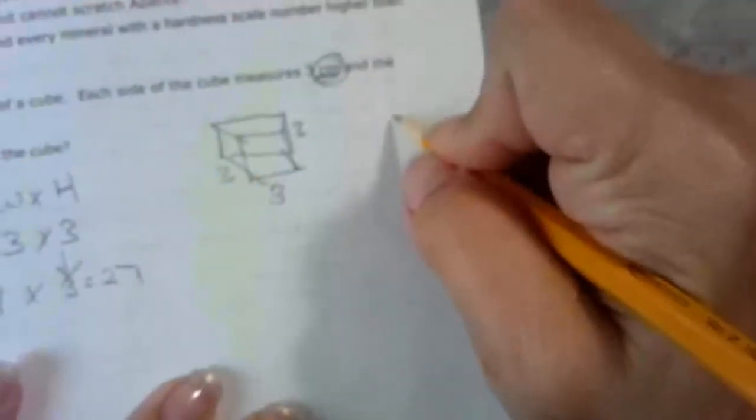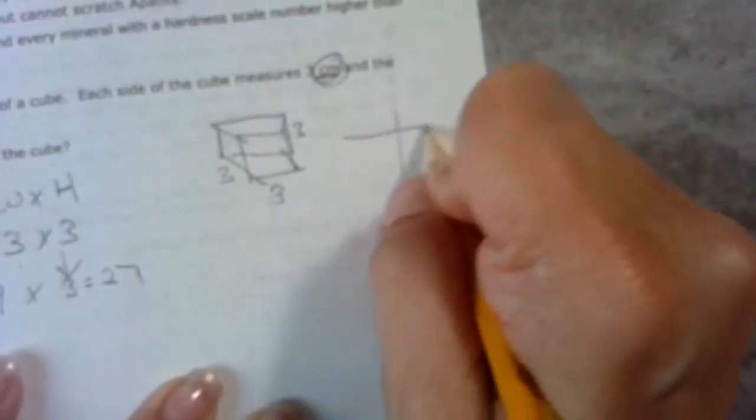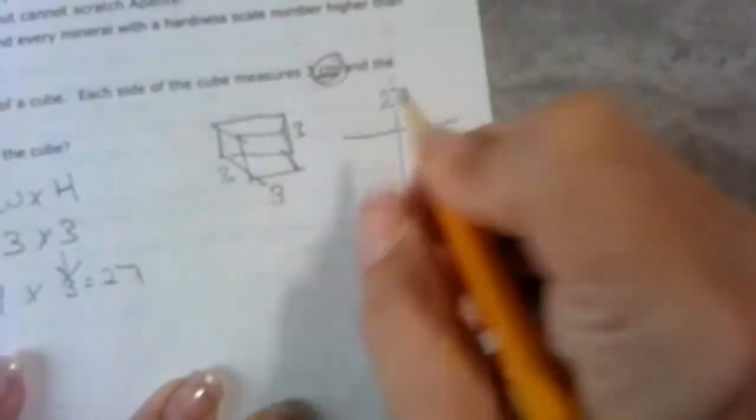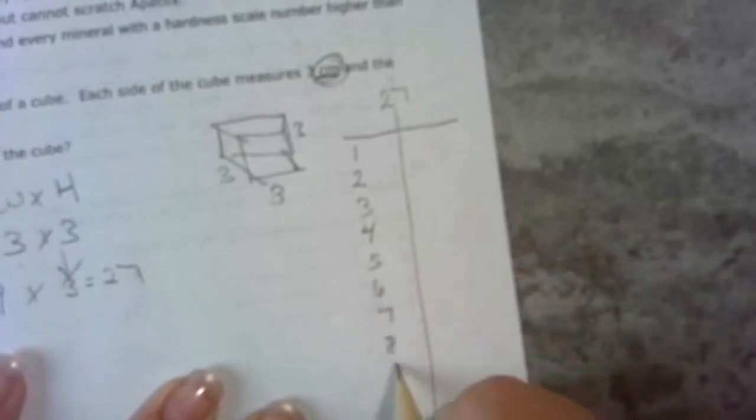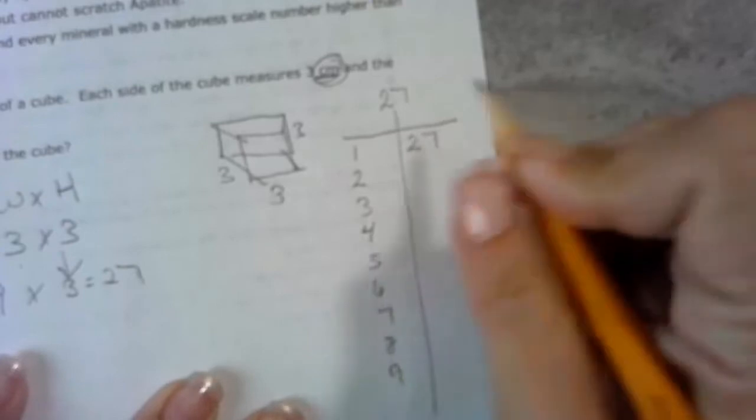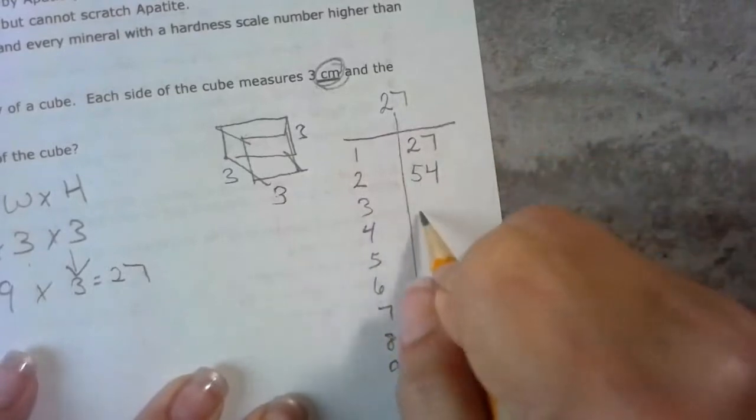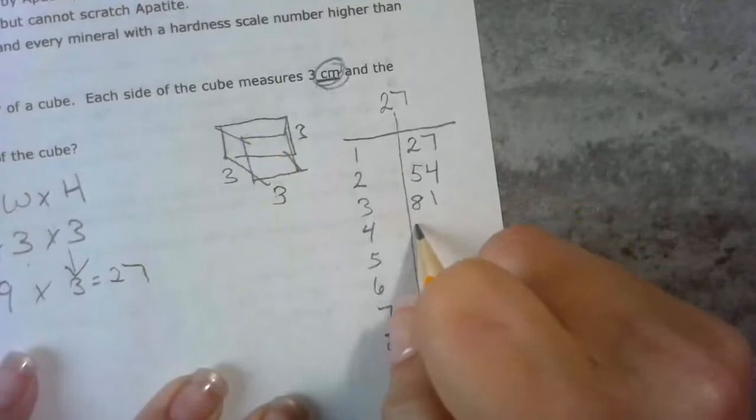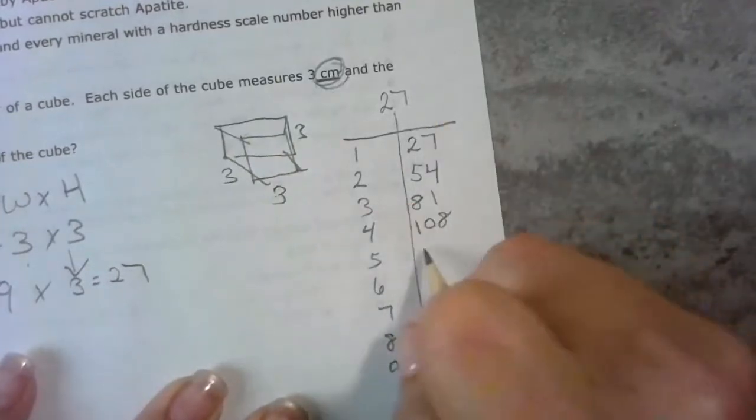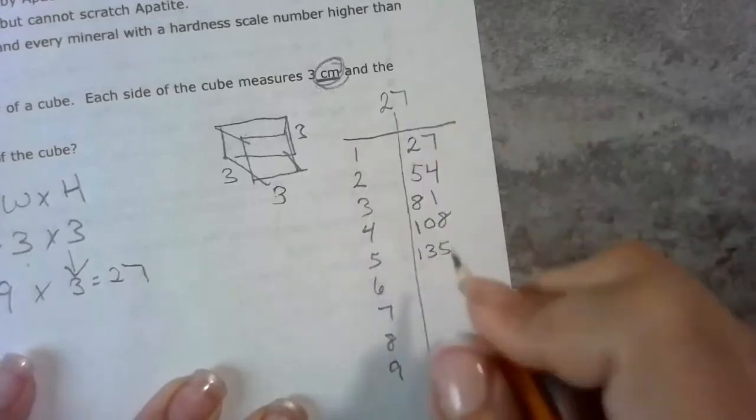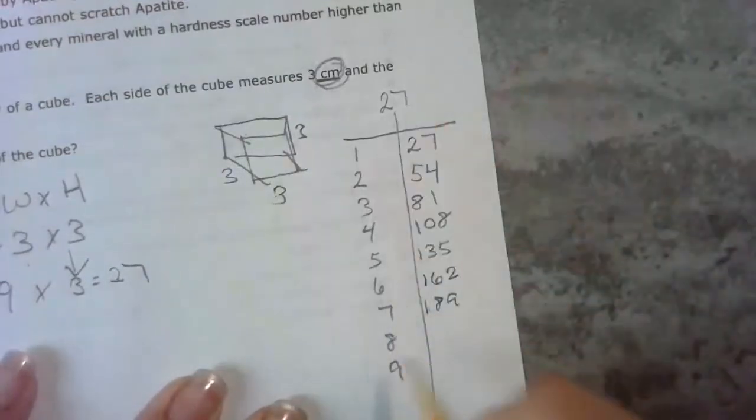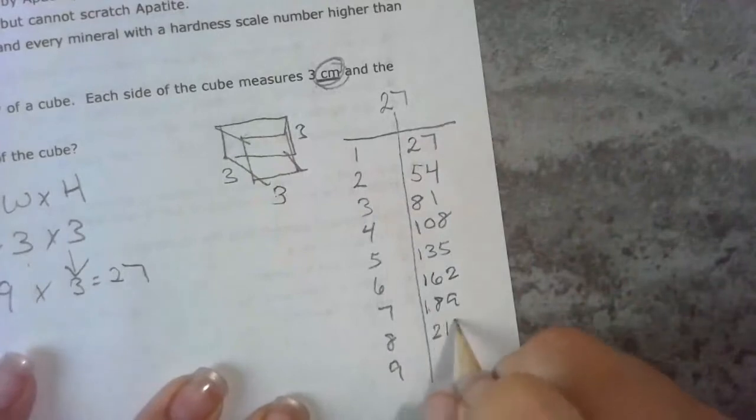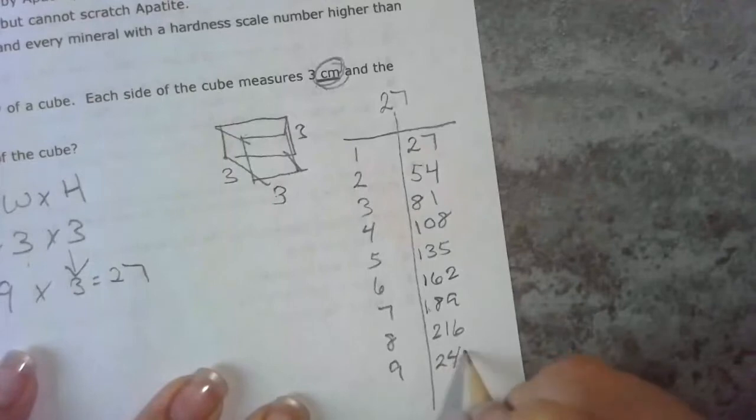I know my denominator is going to go on the outside. I'm going to do my table: 27 times 1 is 27, 27 times 2 is 54, 27 times 3 is 81, 27 times 4 is 108, 27 times 5 is 135, 27 times 6 is 162, 27 times 7 is 189, 27 times 8 is 216, and 27 times 9 is 243.